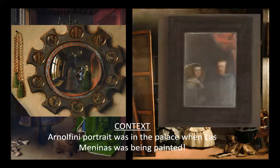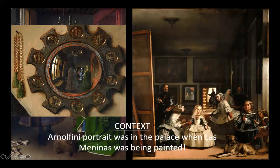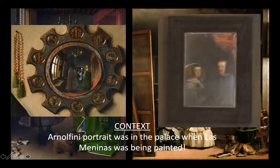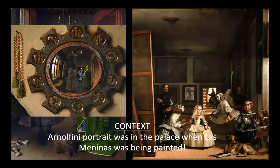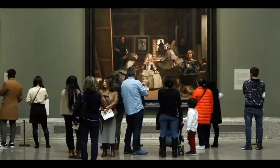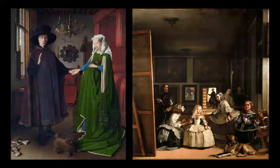If you look at Las Meninas, there's also a painting in the background. We can tell this is a mirror compared to the canvases on the wall because it is brighter and therefore more reflective, and there's a beveled edge that goes around it. Those are clues telling us that this is a mirror, and it's actually reflecting the portrait of the king and the queen. But if it's a mirror, then it's actually reflecting the king and the queen, which makes us the viewer — if we're standing there — the king and the queen looking at this.